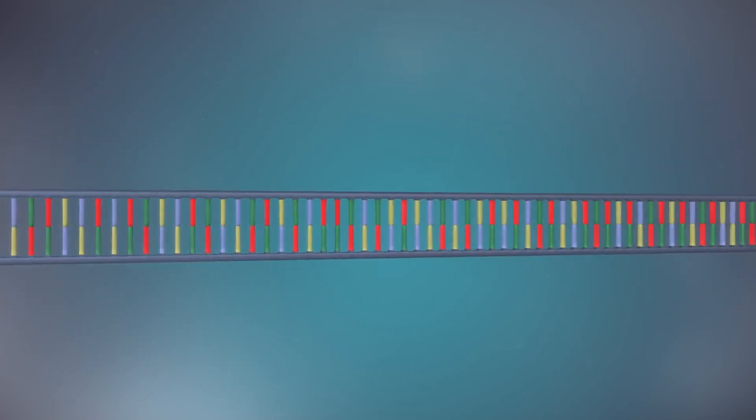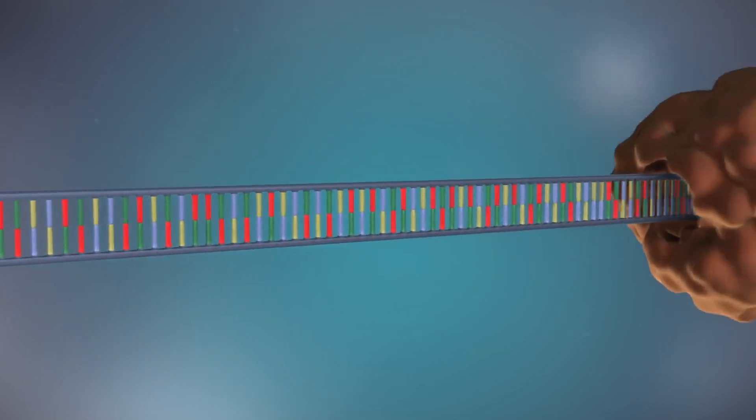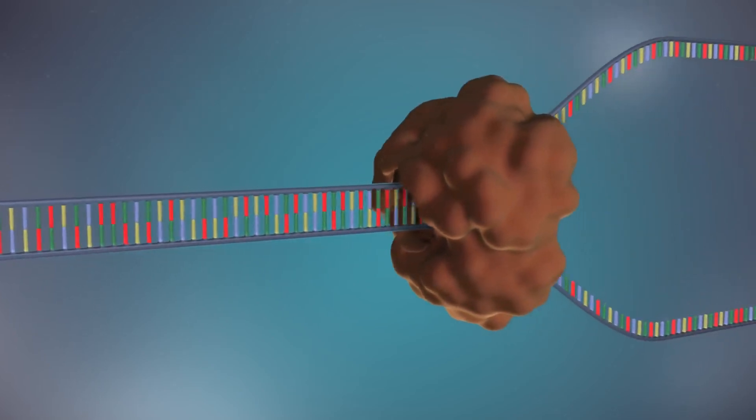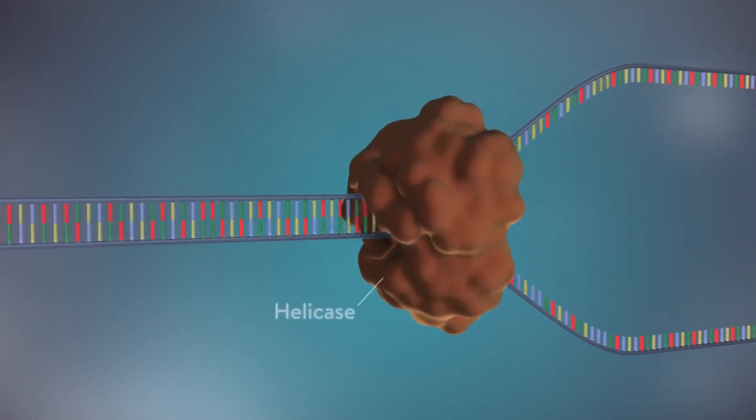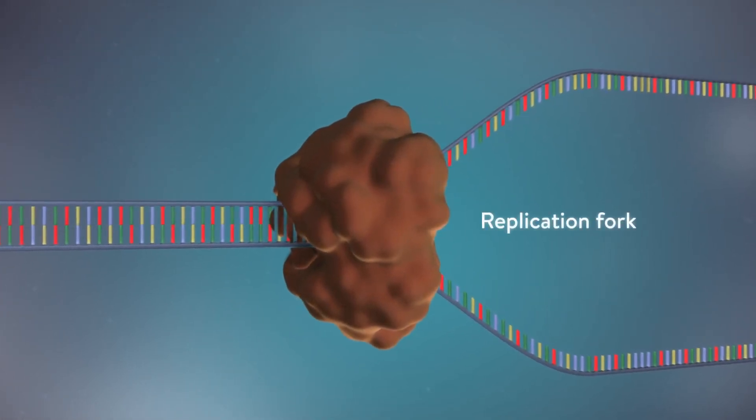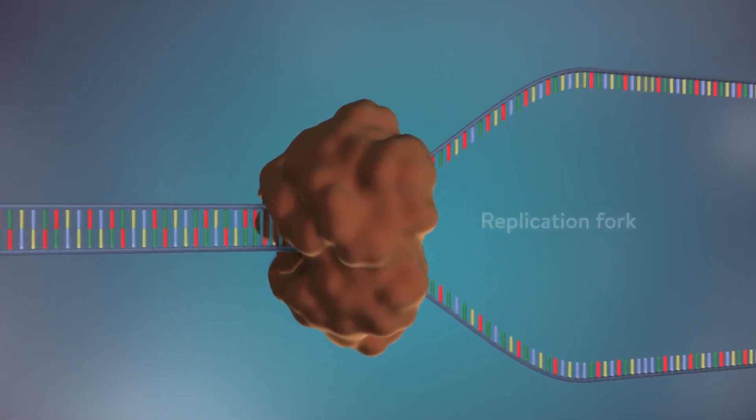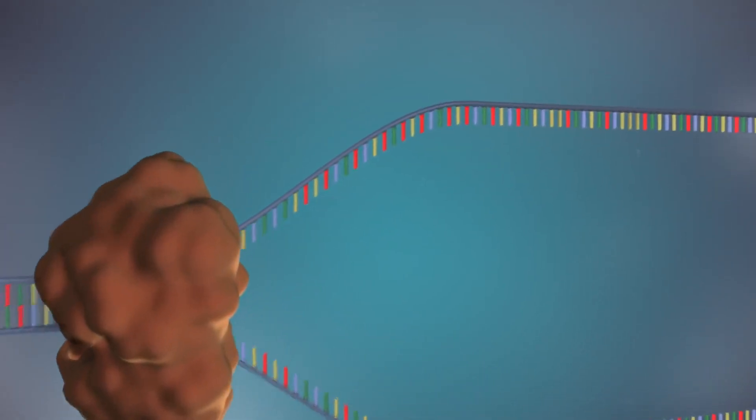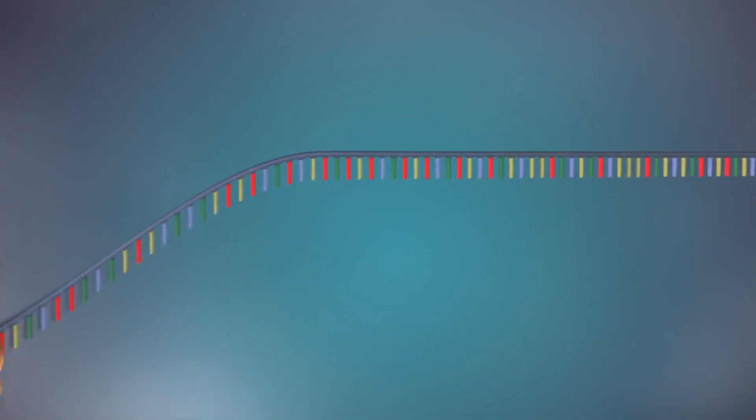The first step in DNA replication is to separate the two strands. This unzipping is done by an enzyme called helicase and results in the formation of a replication fork. The separated strands each provide a template for creating a new strand of DNA.